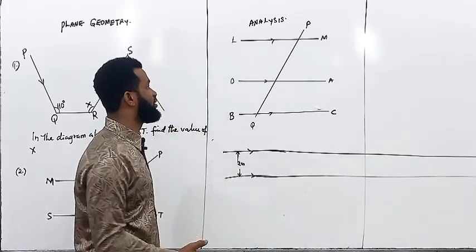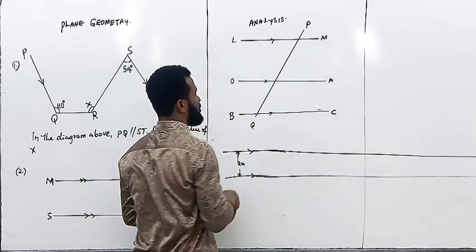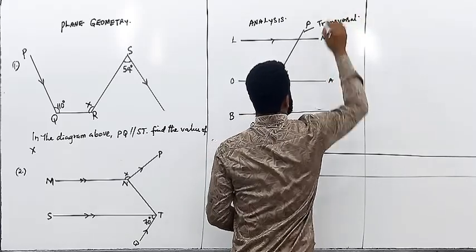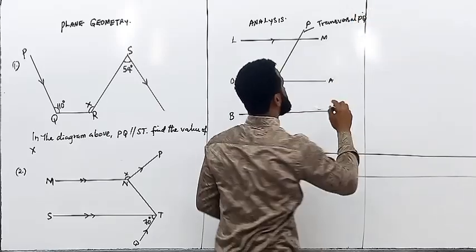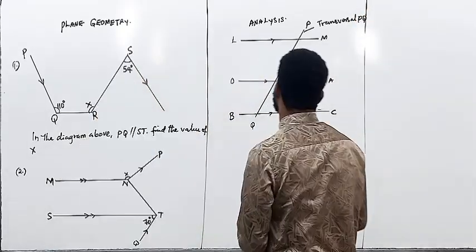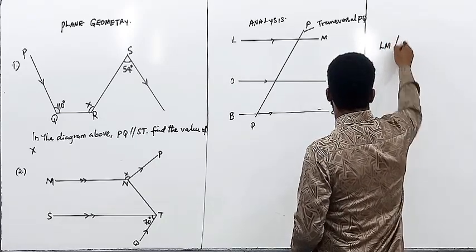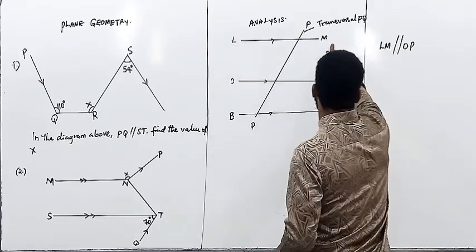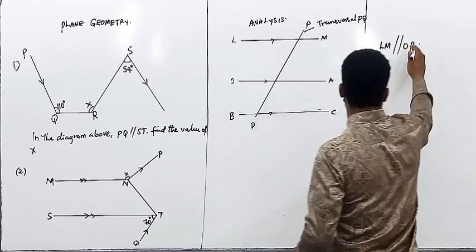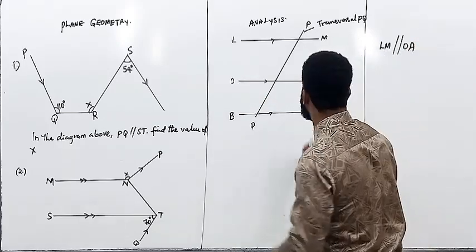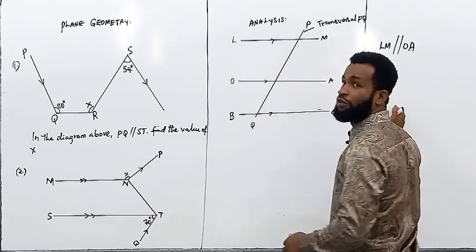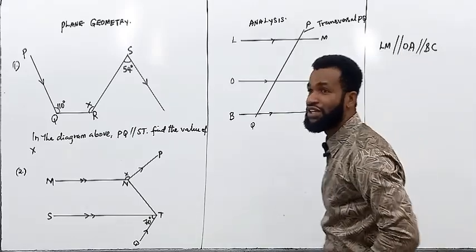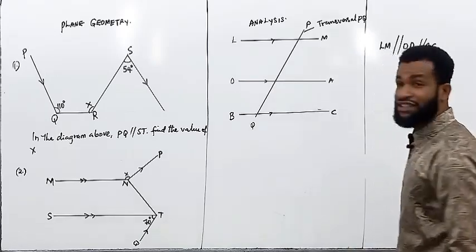Whenever two lines are parallel and there is a transversal — this one is called a transversal PQ — whenever two lines are parallel, you say that LM is parallel to OA, meaning line LM and line OA are parallel. You can also say that BC is parallel, and that is what mathematicians use to indicate that two or three lines are parallel.